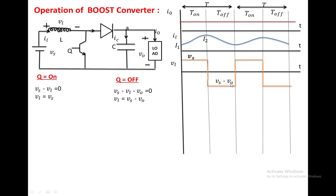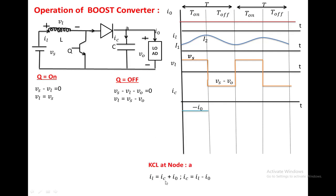The inductor voltage waveform shows V_S during the on interval and V_S minus V_0 (negative) during the off interval. Now we draw the capacitor current. When the switch is on, the capacitor supplies a current of I_0 — this is a negative current, minus I_0 — so in this interval the capacitor is discharging. When the switch is off, current passes from source through the inductor and load. Applying KCL at node A: the incoming current is I_L and the leaving currents are I_C and I_0, so I_L equals I_C plus I_0, giving I_C equals I_L minus I_0.